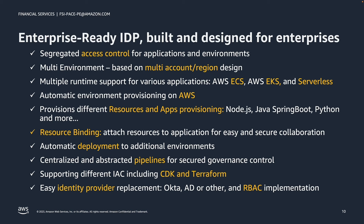Some of the out-of-the-box features the solution provides are: multi-account and region automatic environment creation; different runtimes such as Amazon ECS, Amazon EKS, and serverless; automatic deployment to other environments with the click of a button; shared resource provisioning and resource binding; centralized and abstracted pipelines for better control at scale; using infrastructure as code as a principle, including CDK and Terraform; and enforcing security guardrails on different levels and scope, including Backstage RBAC and AWS-specific policy statements.